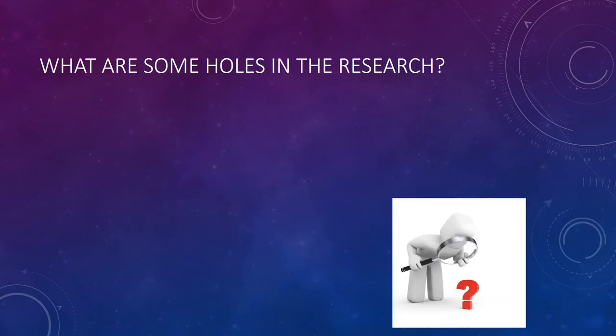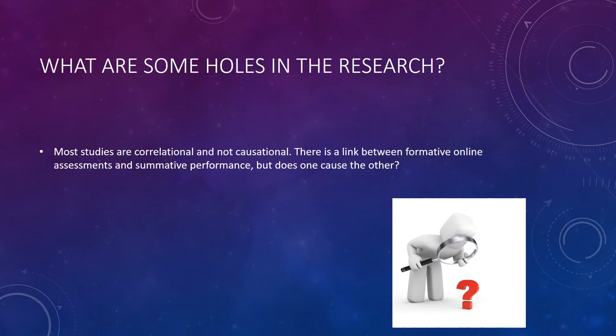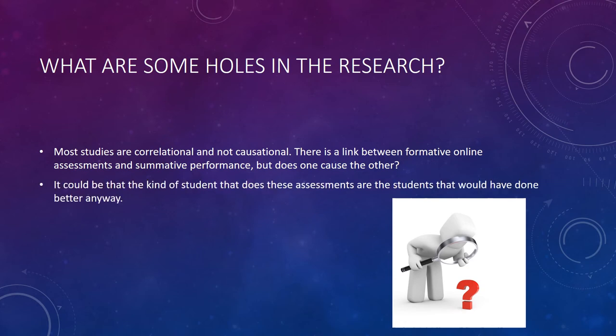What are some of the holes I found in the research on formative online assessment? The main one, just like any other thing in educational research, is that most of the studies are correlational and not causational. It's hard to get a good experimental study in anything that deals with students, particularly K to 12. You can get the link between formative online assessment and summative performance, but it could mean that most students who do these formative online assessments are the ones that are going to do well anyway — maybe it's just a sign of a good student and not as beneficial as it might seem. That's the main thing I would like to see addressed.